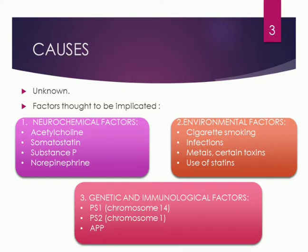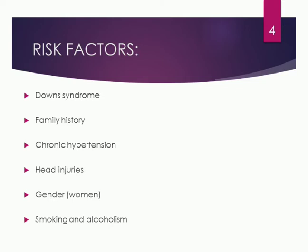The third factor is genetic and immunological. Factors like PS1, found on chromosome 14, and PS2, found on chromosome 1, and APP — the amyloid beta precursor protein, which will be discussed in the following slide — these factors have an accelerating effect in bringing out the risk of Alzheimer's disease.